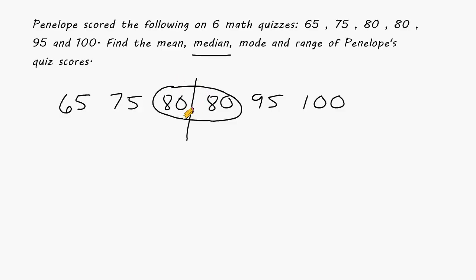But notice these two numbers are the same, so there is nothing in the middle, therefore 80 will be our middle value. But if those two numbers were different numbers, you would simply add those two numbers together and divide by 2, and that would tell you what is exactly in the middle of those two numbers.